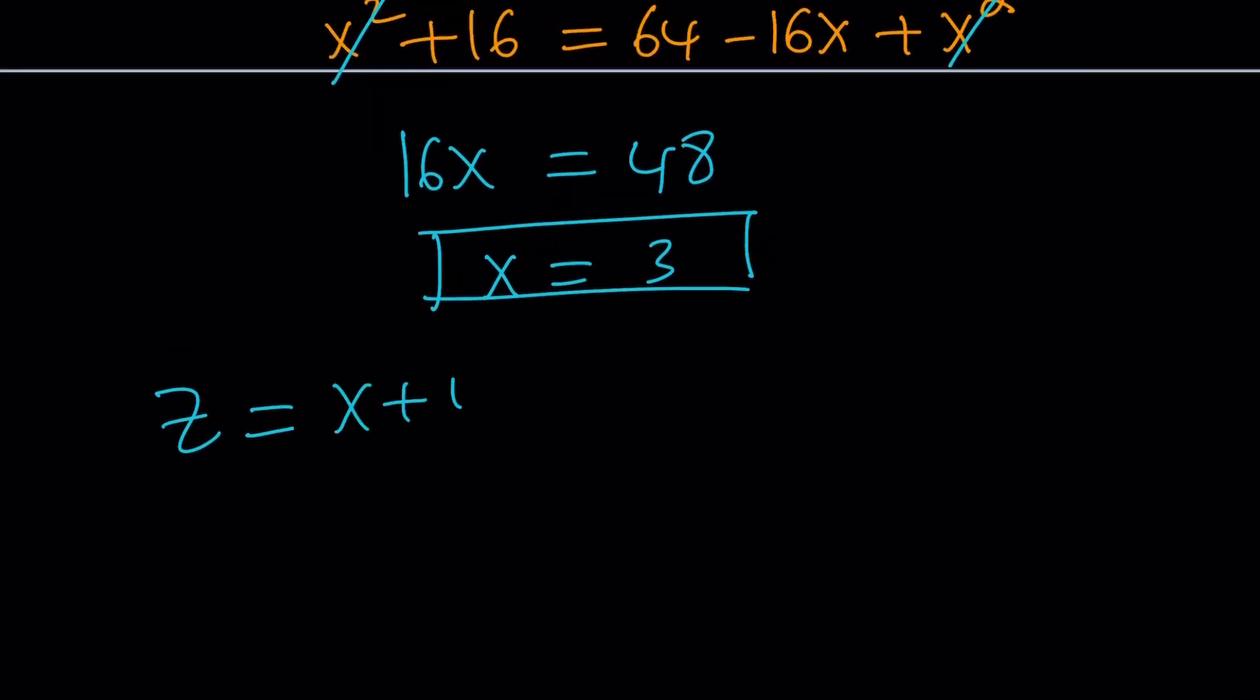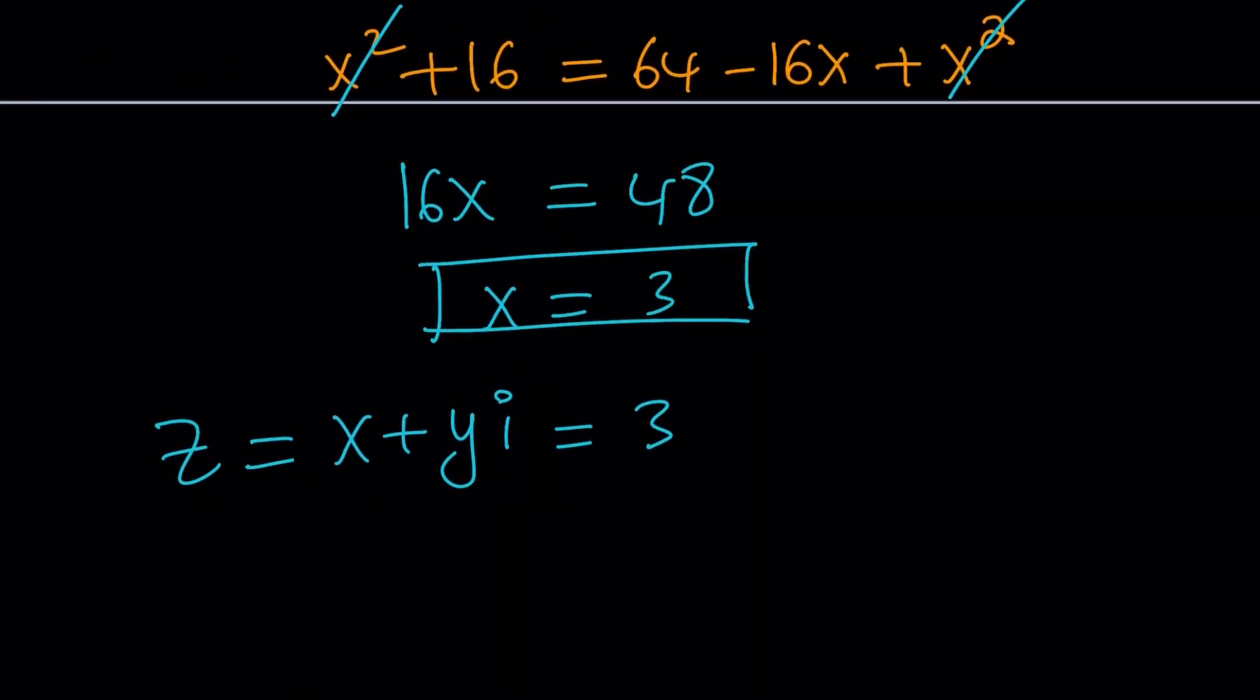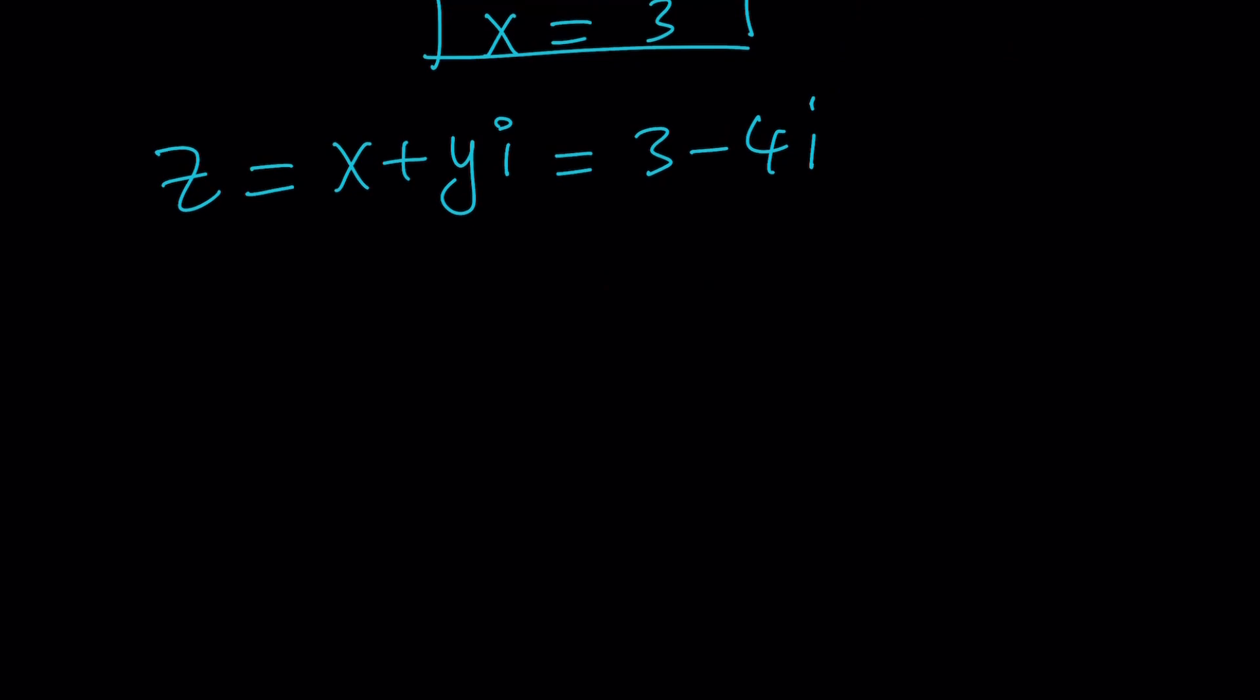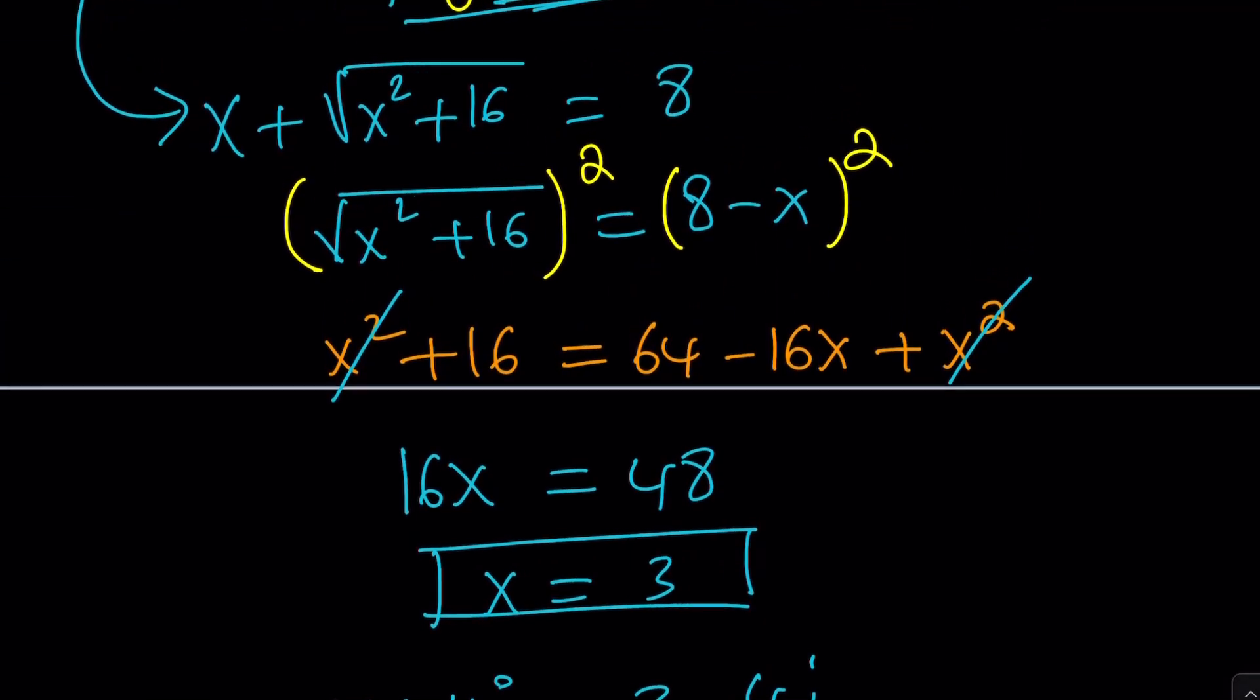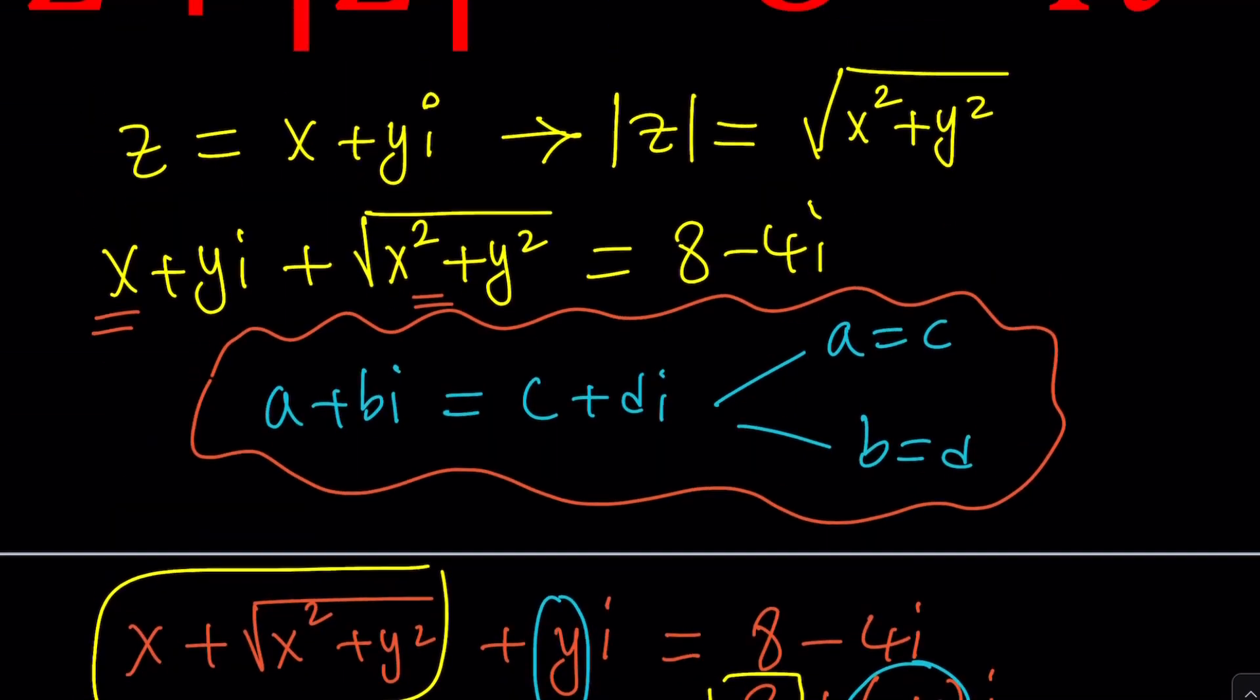So, Z is X plus YI. Remember our assumption at the very beginning. So, take good notes. So, you know what you're doing. And then, since X is 3 and Y is negative 4. Y was negative 4, right? Yes. The answer is going to be 3 minus 4I. So, Z is equal to that number, which is kind of somewhat special because 3, 4, 5 triangle.